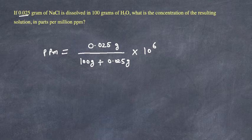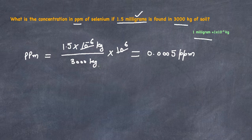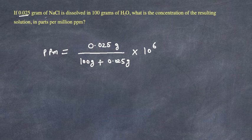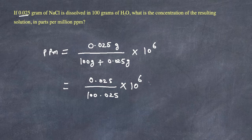Note an important difference from the previous example: here the sodium chloride is dissolved separately in the water, so we add the two masses together for total mass. In the selenium example, the selenium was already present within the 3,000 kilograms of soil, so we used 3,000 kilograms directly — not 1.5 milligrams plus 3,000 kilograms. Solving this: 0.025 divided by 100.025 multiplied by 10⁶ gives approximately 250 PPM.